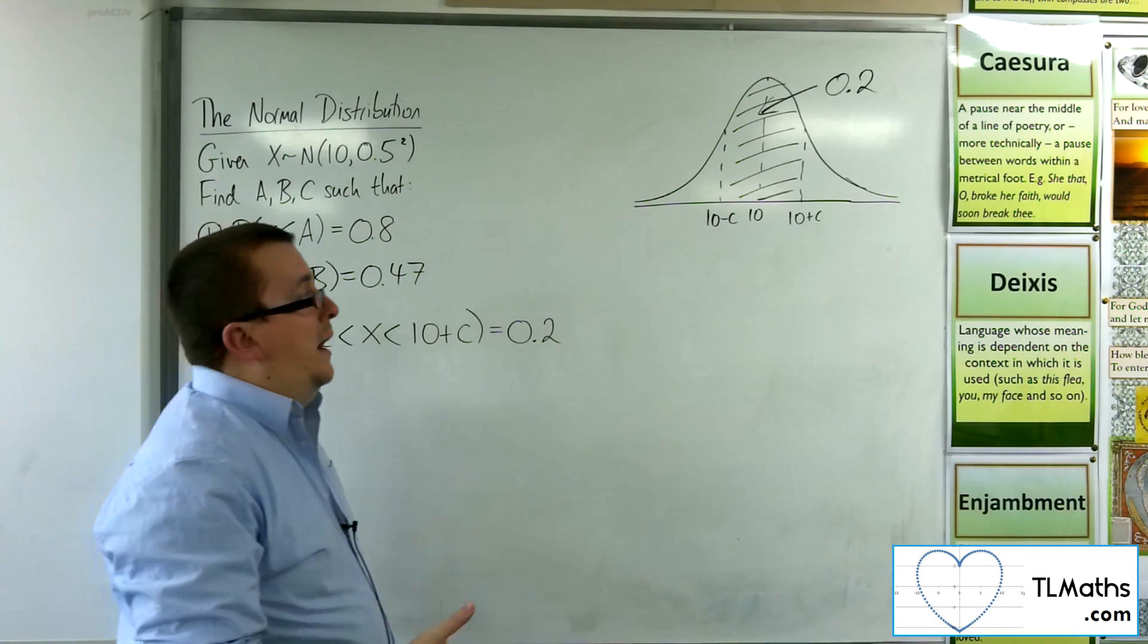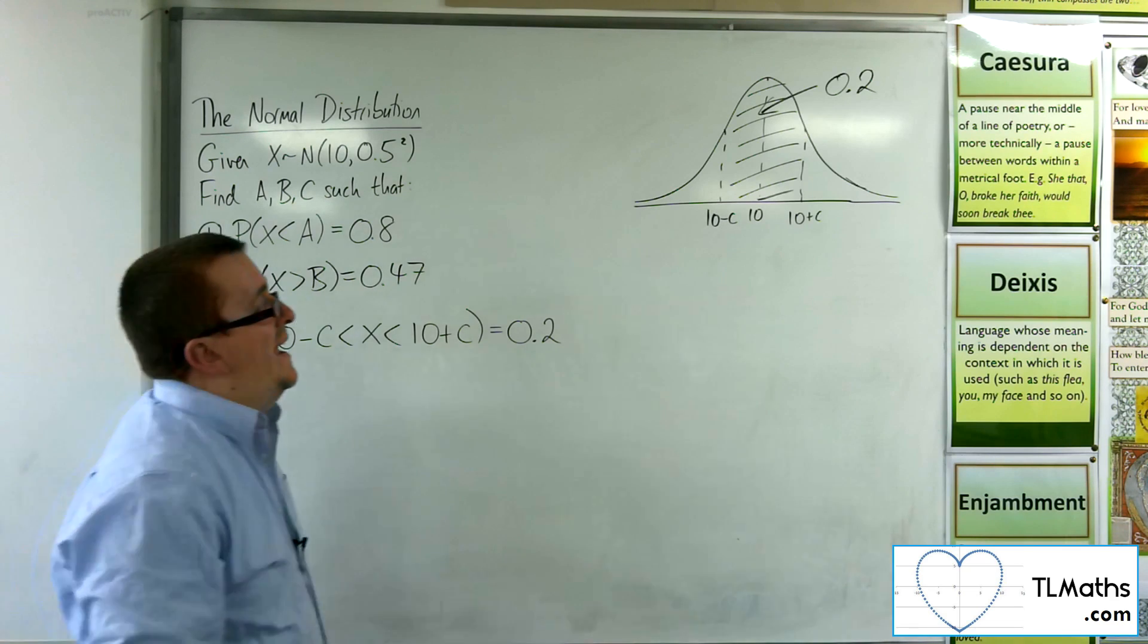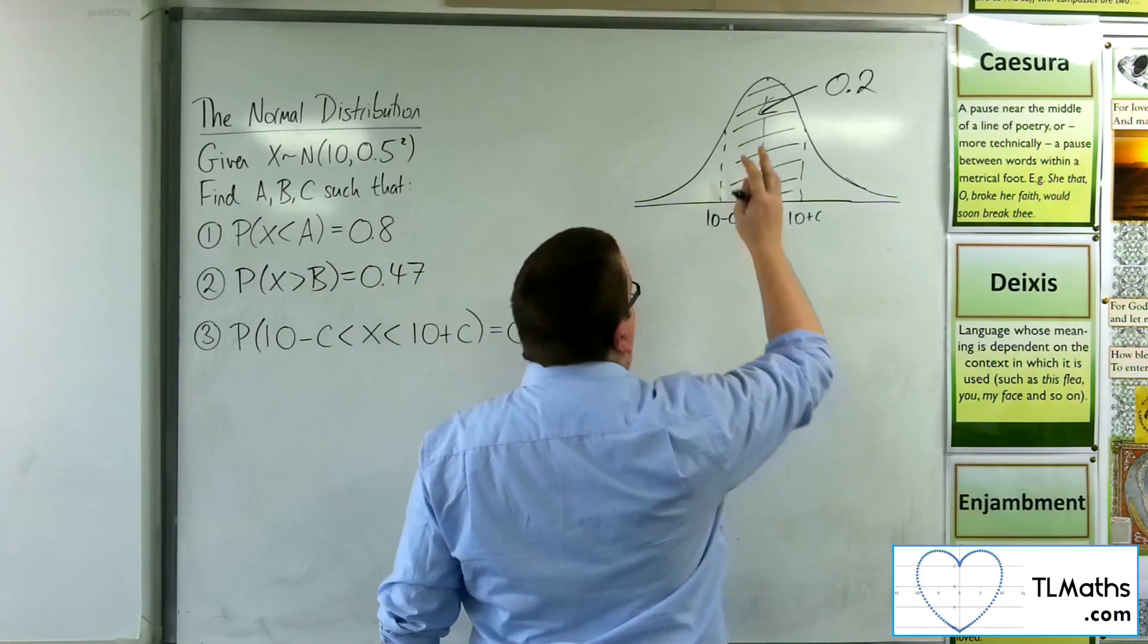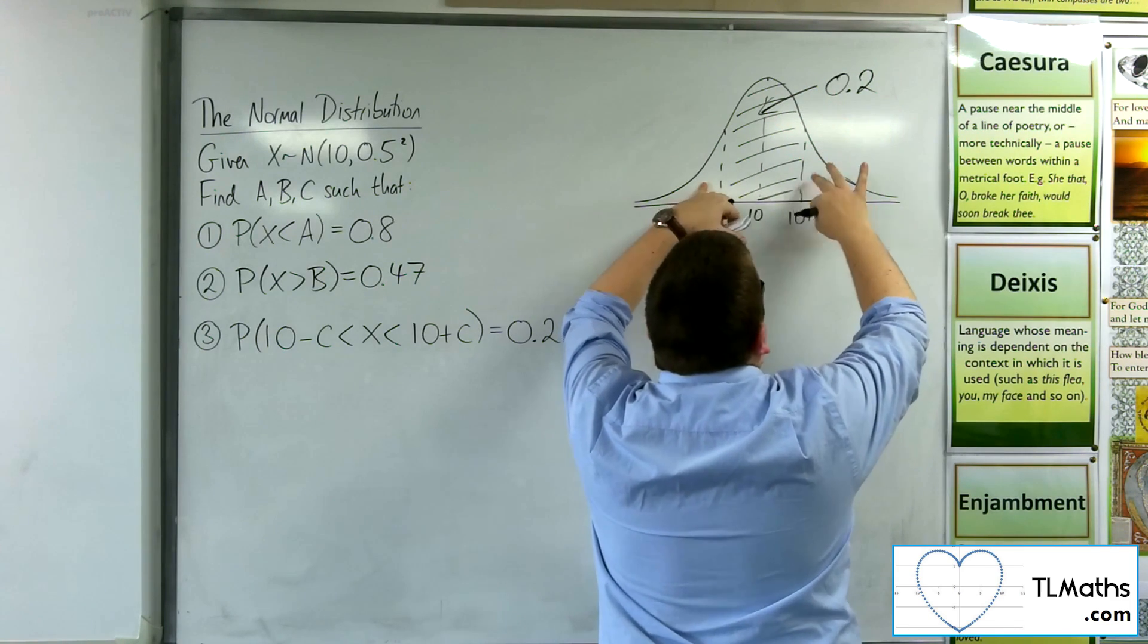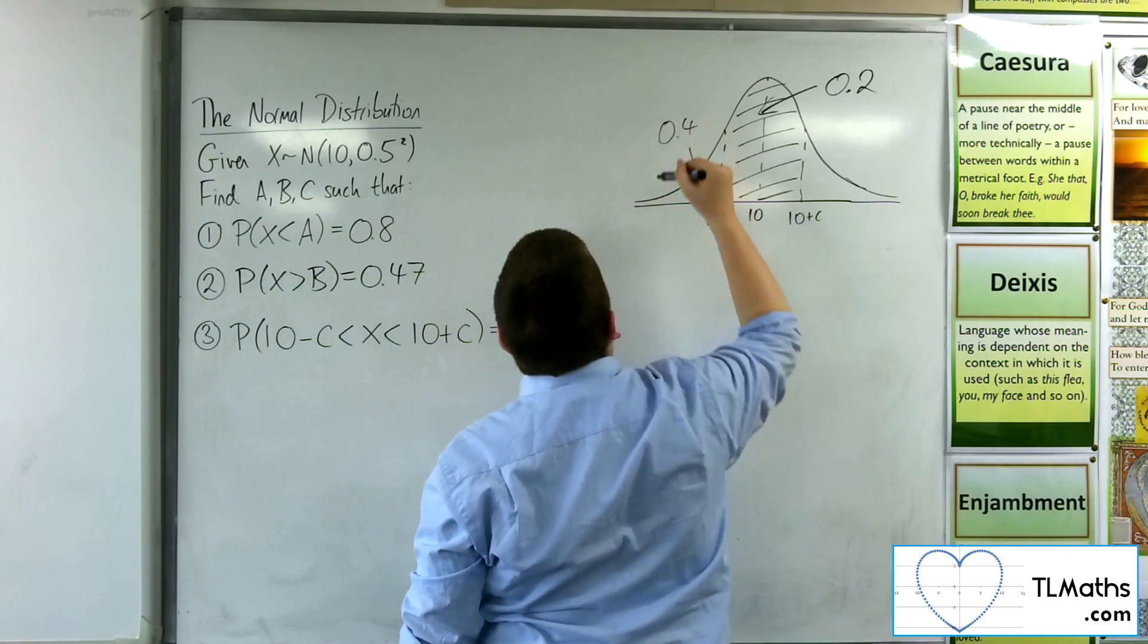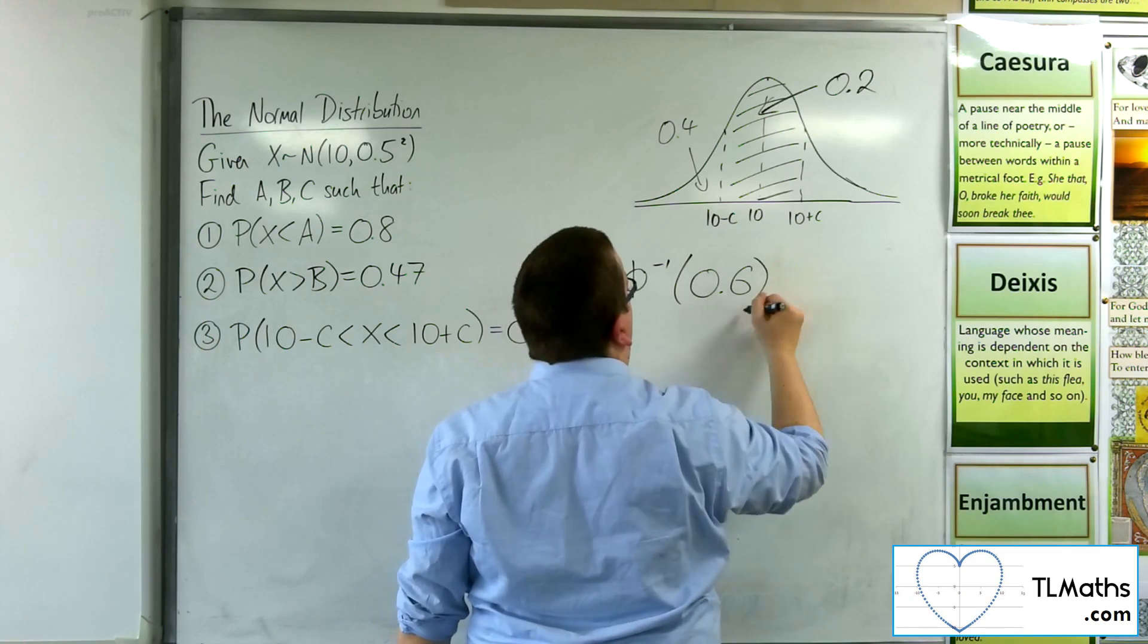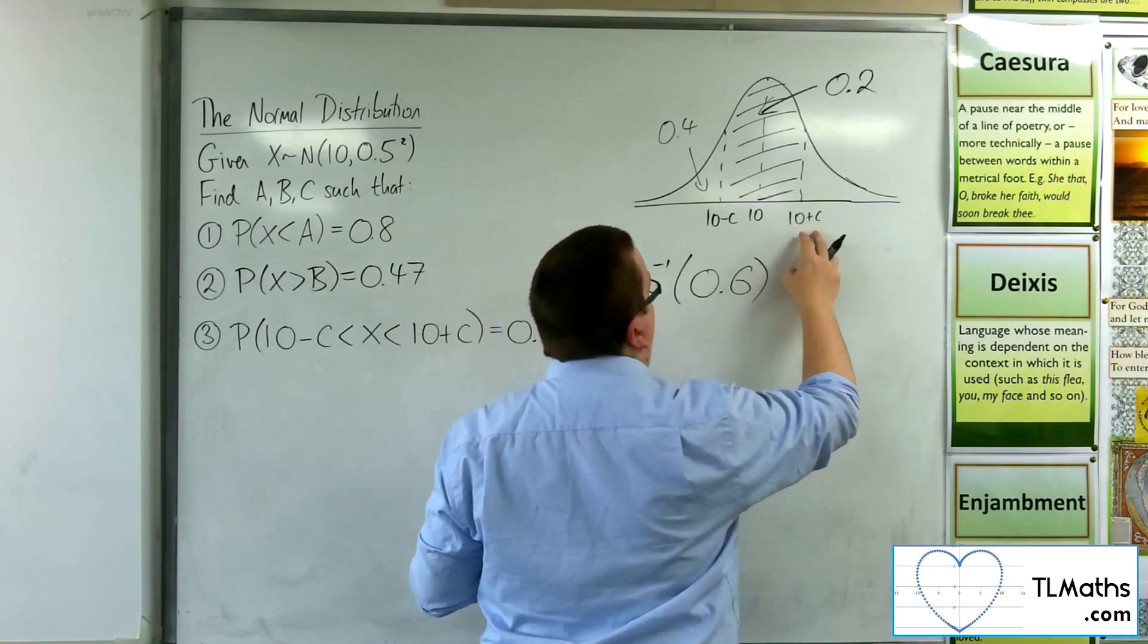Now remember, we want to look up an area to the left. We can't just type in 0.2, because the area always has to go from the point you're looking at all the way down to negative infinity. So what we need to think about is, well, if that's 20%, then these two parts must add up to 80% for the whole thing to be 100. So if they are 80%, and this is symmetric, one of these is 40%. So this position here is precisely 20% plus the 40%, so 60% along. So I can inverse norm 60%, 0.6, and that will give me the position of 10 plus c.